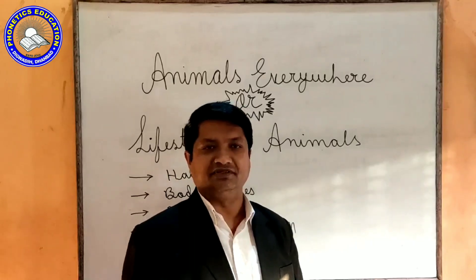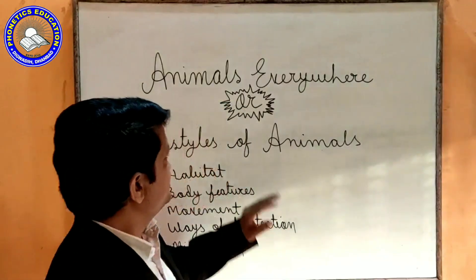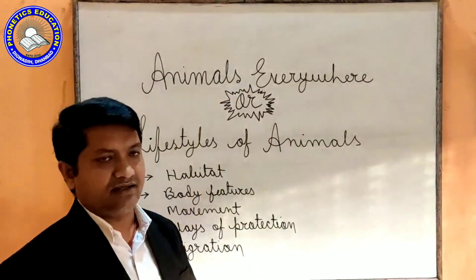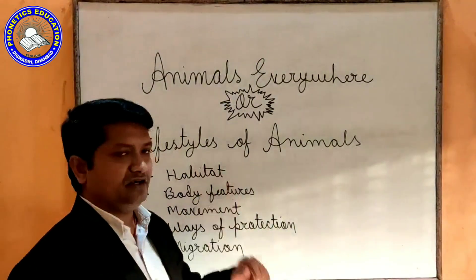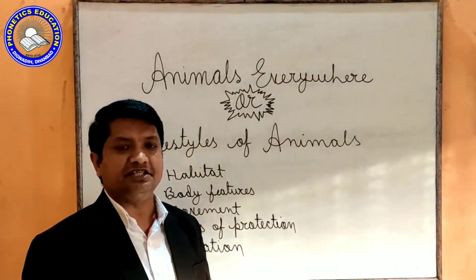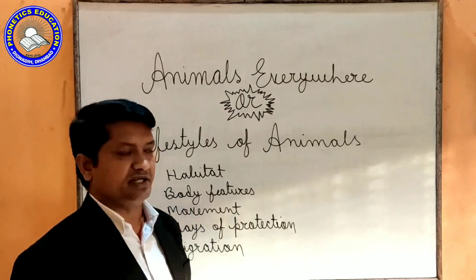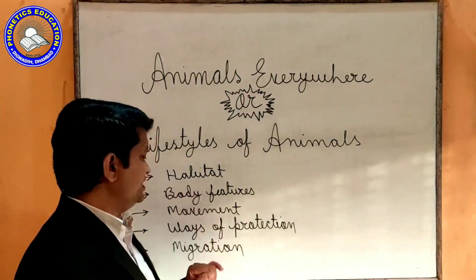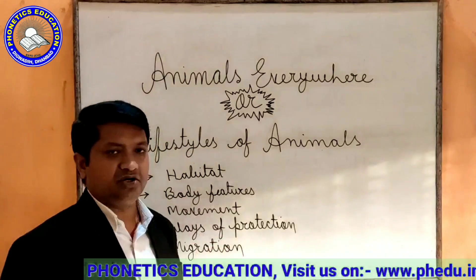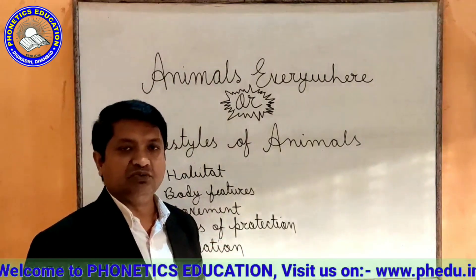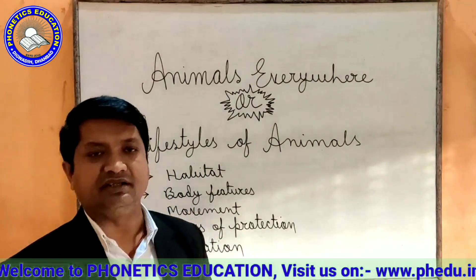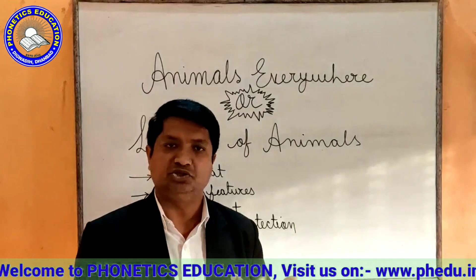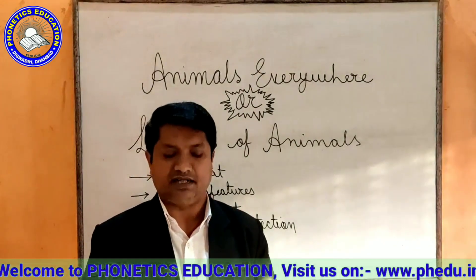This chapter is about animals — their three layers, or lifestyle. In this chapter there are mainly five points: habitat, body features, movement, ways of protection, and migration. We will discuss this chapter by reading line by line through the book. Now let us start.